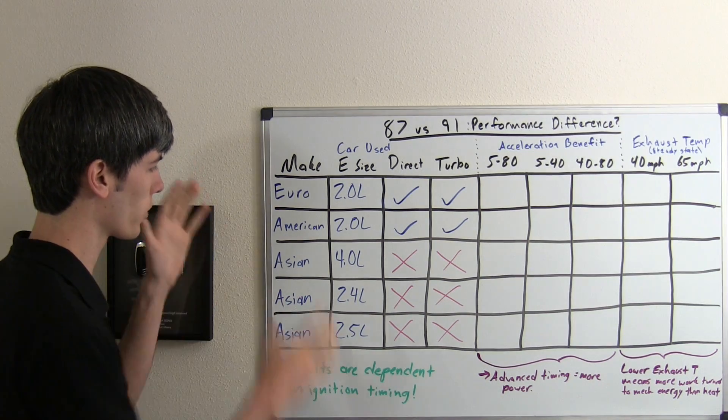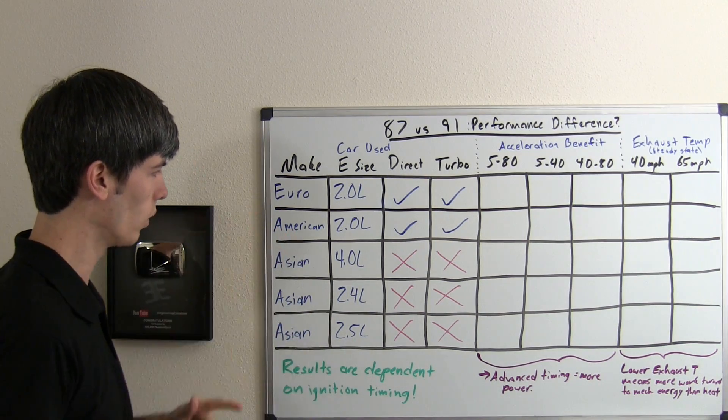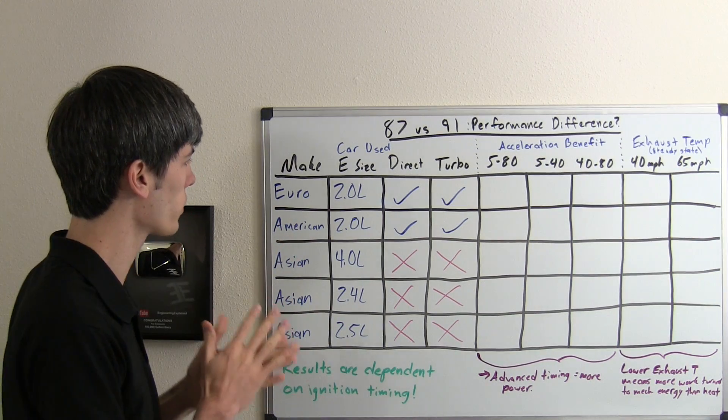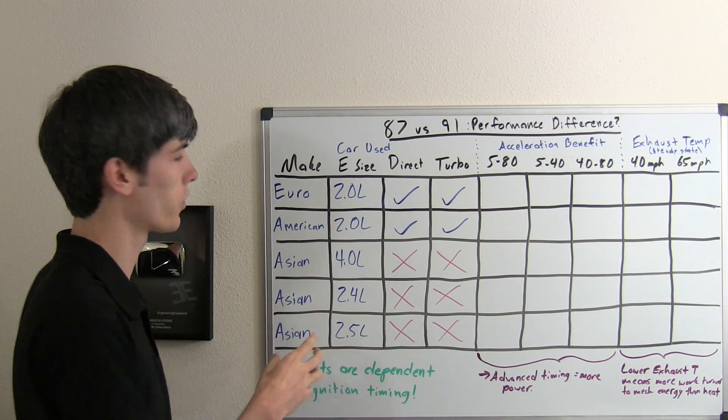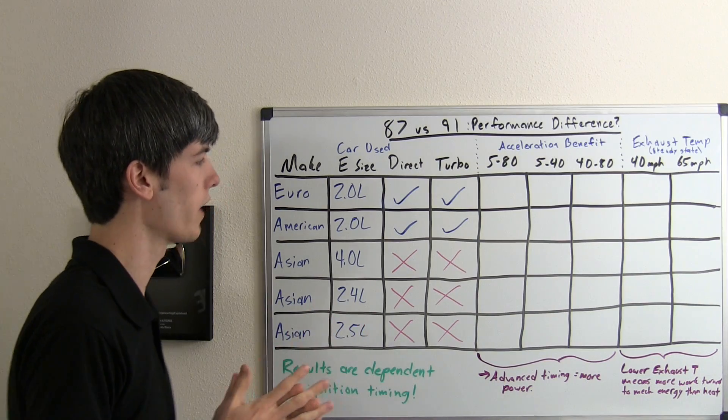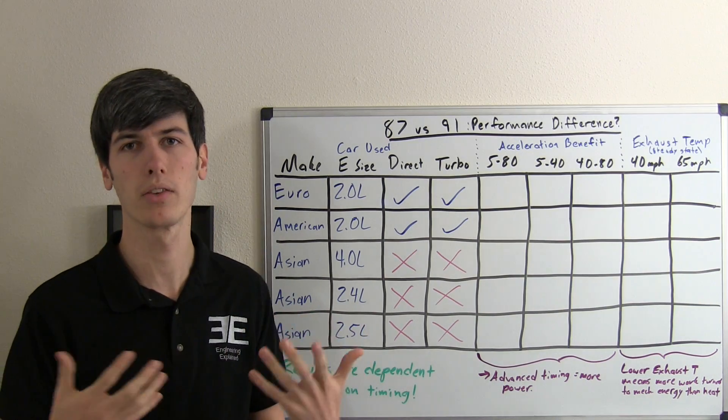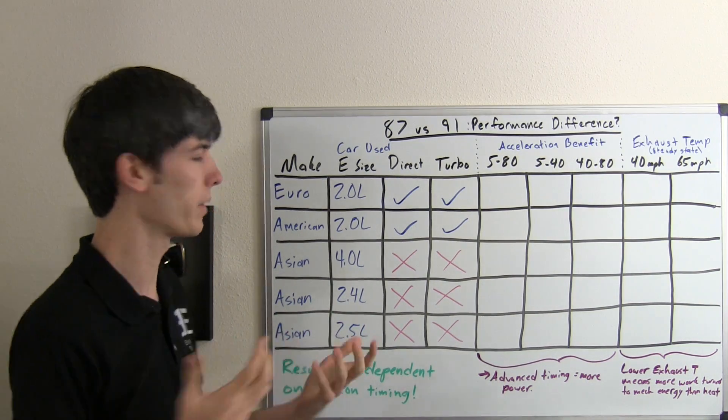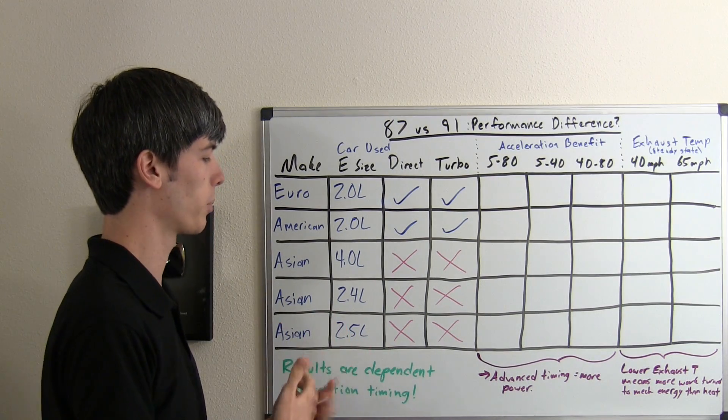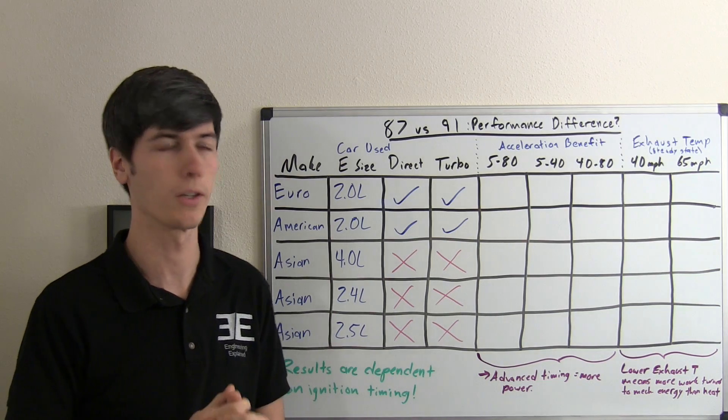What they did was they took five cars: one European, one American, three Asian. These five different cars all recommend using premium fuel, and you would assume there would be some performance gain from it and that they would be able to adjust ignition timing in order to have better performance or be more efficient.